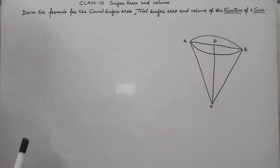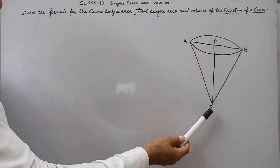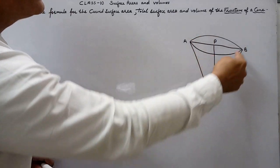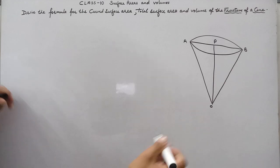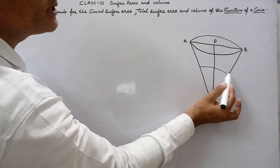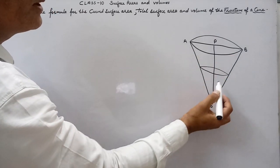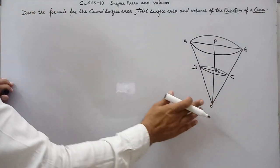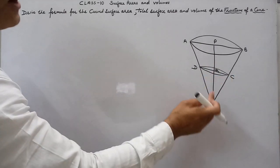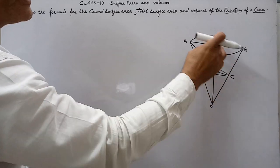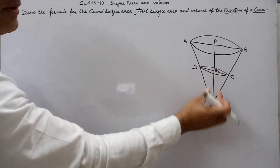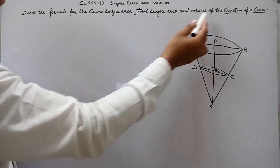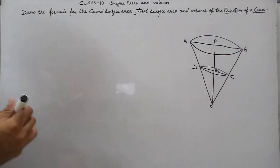First, I have taken cone OAB. If I cut this cone with a plane parallel to its base, I get a frustum. After cutting, I get a smaller cone ODC and a frustum ABCD. The upper shape is called the frustum. If we remove cone ODC, we get the frustum. We need to find the curved surface area, total surface area, and volume of frustum ABCD.